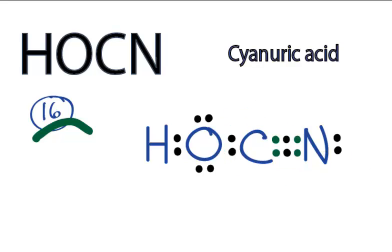So we've completed the octets on all of the atoms. If we take a look at our formal charges, we'll find that there's zero for each atom in this Lewis structure. If we were to use a triple bond between the oxygen and the carbon, we wouldn't have formal charges of zero — that would mean it's a less likely Lewis structure. So this is the best Lewis structure for HOCN.